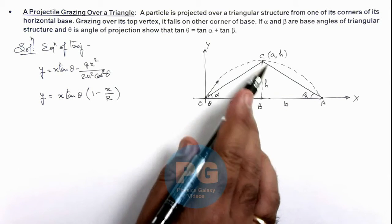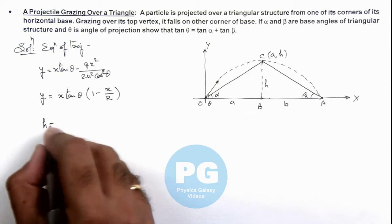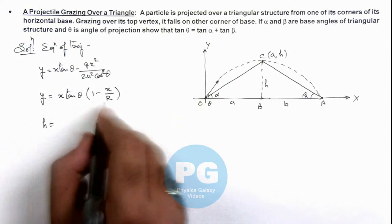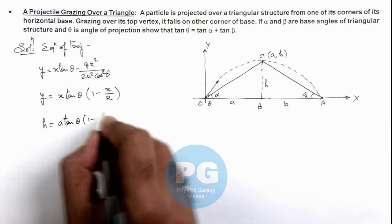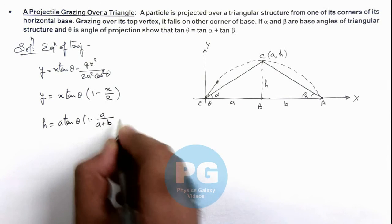In this situation, if we satisfy the coordinates here we can write y is equal to h and x can be taken as a for point C which satisfies this equation. So it is a tan theta times 1 minus a by R, and the range of this projectile we can write as a plus b.